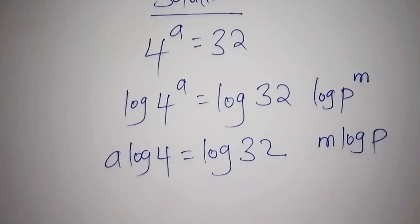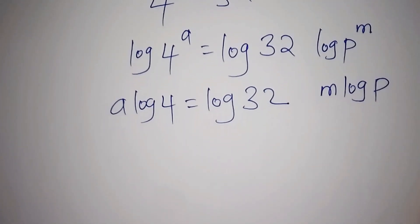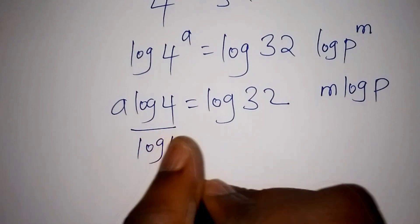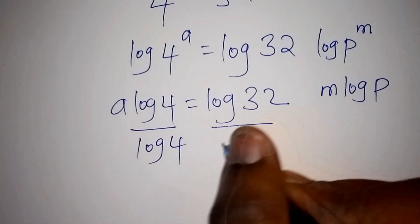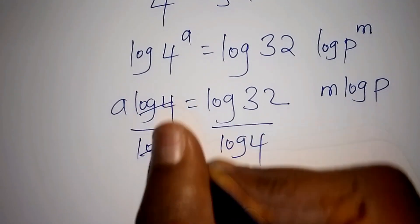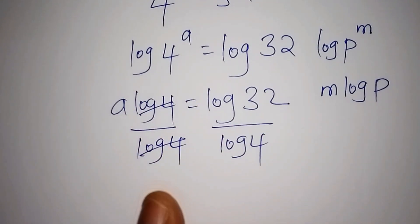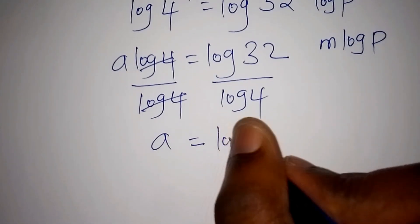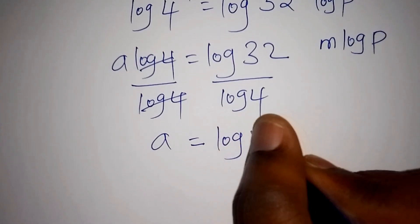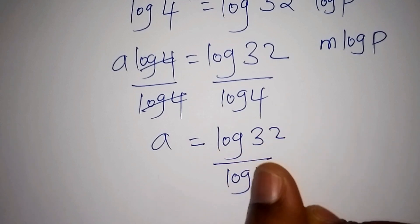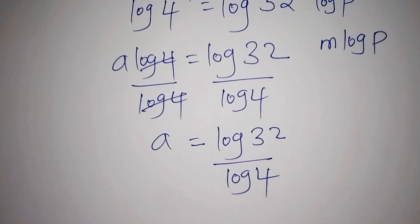From here now we shall divide both sides by the log of 4 — this side by the log of 4, and also this side by the log of 4. So log 4 and log 4 shall cancel, so that our value for a shall be equals to the log of 32 all over the log of 4.